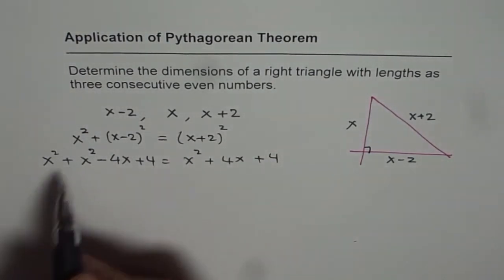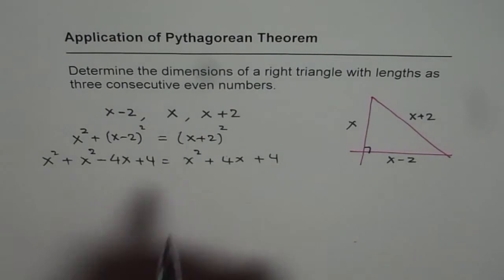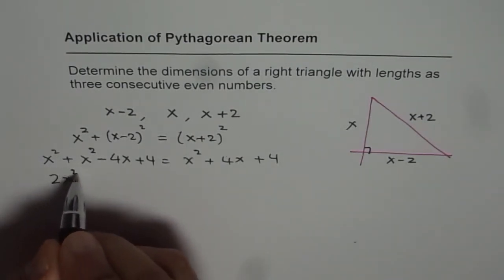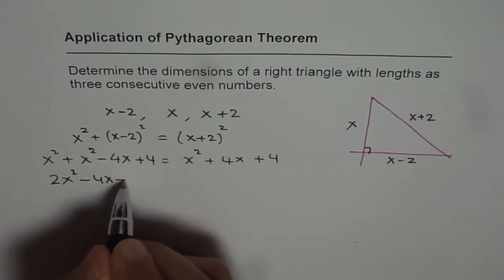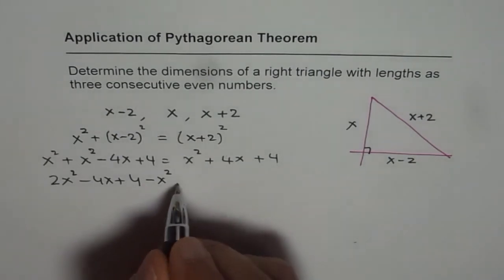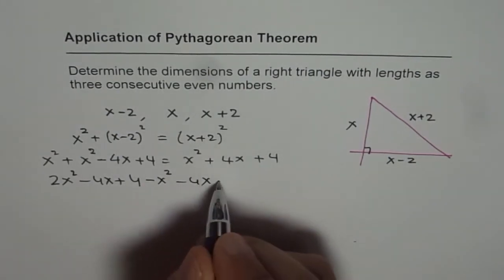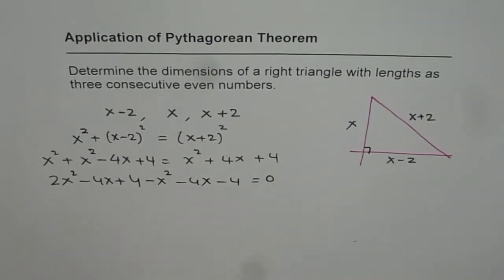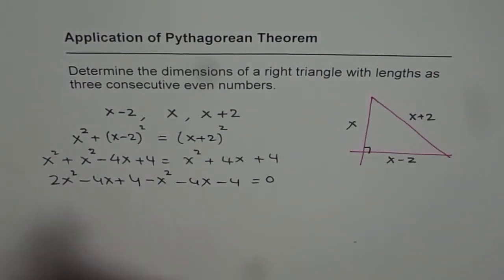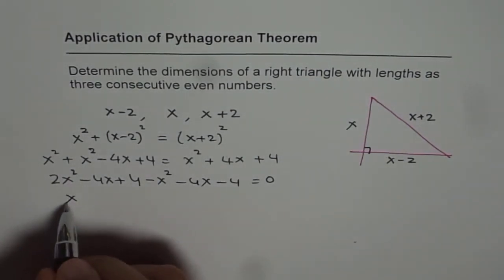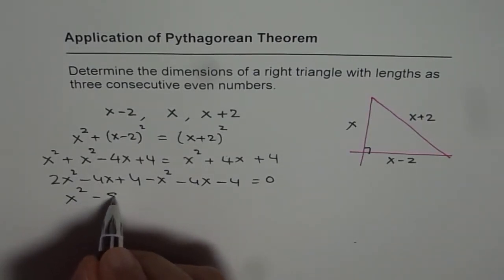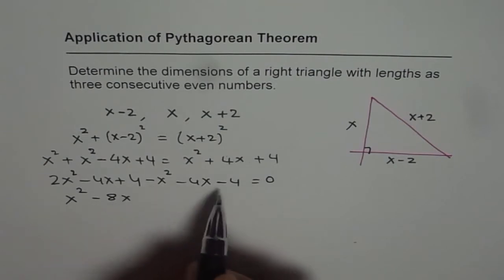Now we can bring all the terms to the left and solve. So we already have 2x squared here. So we have 2x squared minus 4x plus 4. Now bringing minus x squared becomes minus, minus x squared minus 4x and minus 4 equals to 0. Combine like terms. 2x squared minus x squared gives us just x squared. Minus 4x and minus 4x is minus 8x plus 4 minus 4 is 0.